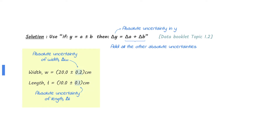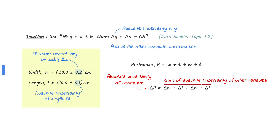From the information given in the question, the absolute uncertainty of width and length is found to be 0.2 and 0.1 centimeters respectively. To find the absolute uncertainty of the perimeter,